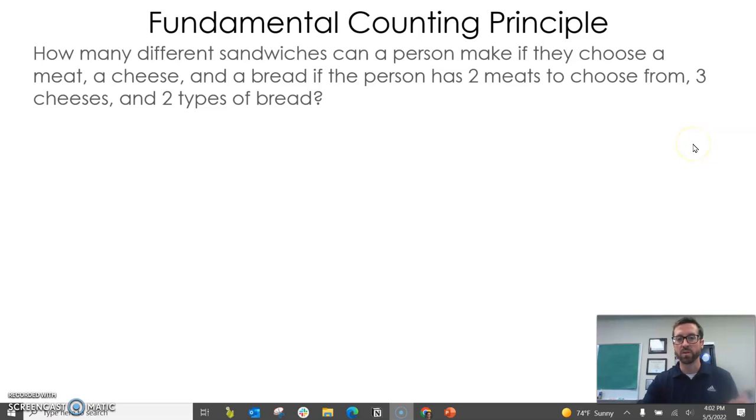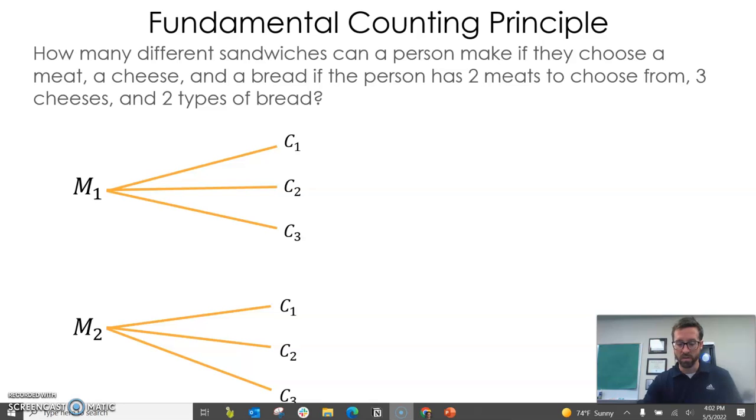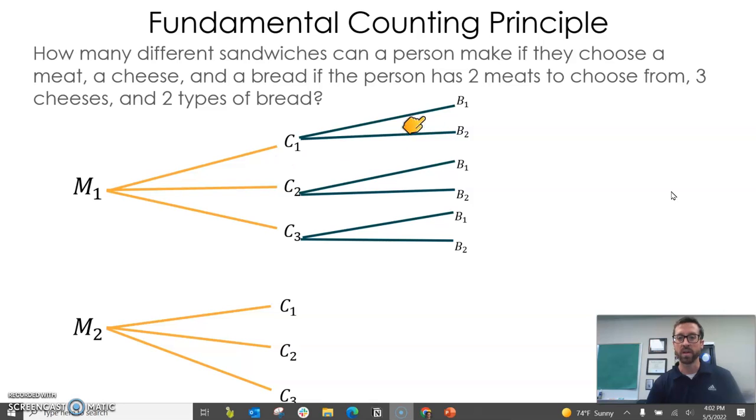We can illustrate this with a tree diagram. If I started, the first decision is what meat to get, and let's just call it meat one and meat two, turkey, ham, whatever you want to call it. From there, if they choose meat one, then they could choose any of three types of cheeses. If they chose meat two, they could choose any of those three types of cheeses. So far there's six outcomes, right?